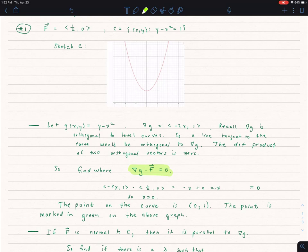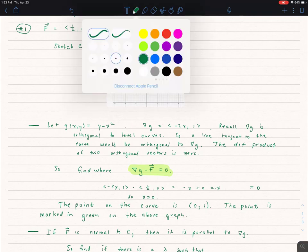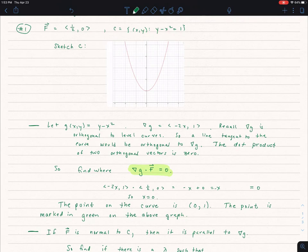When x is equal to zero that F is in fact orthogonal to G, which means it's tangent to C. So if I were to graph that, that point would be right there. And F would be at that point tangent to the curve.